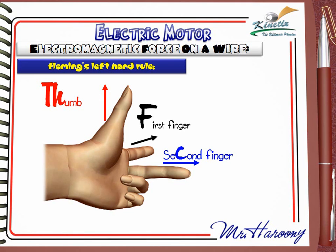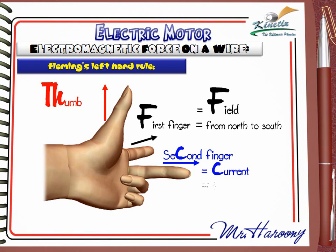The first finger points to the direction of the magnetic field, which is from north to south. The second finger points to the direction of the conventional current, which is from positive to negative. If these two fingers are applied correctly to the case, the thumb points to the direction of the pushing force. Many examples are needed to understand this perfectly.